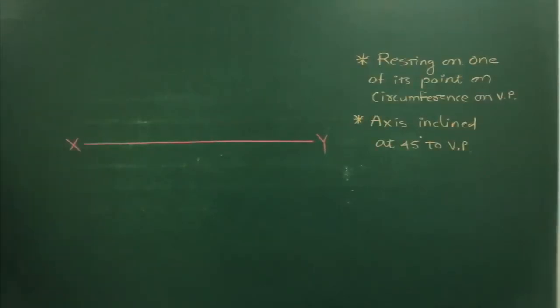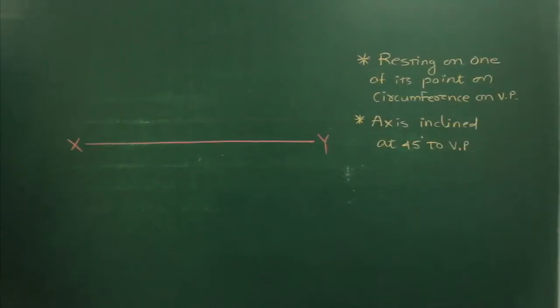In this problem, the cylinder is resting on one of its points on the circumference on a vertical plane with axis inclined at 45 degrees to VP.